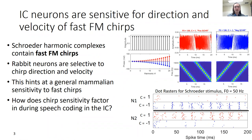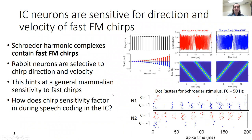Rabbit neurons are sensitive and often selective for chirp direction and velocity. The dot rasters shown here display responses from two separate neurons, where the x-axis is time, the y-axis within a row shows differing repetitions of the same stimulus, and the different rows are different directions of Schroeder chirp. Neuron one is selective for the negative direction, while neuron two is selective for the positive direction. This selectivity is even more striking given that differing directions of Schroeder chirp are simply time-reversed versions of one another.